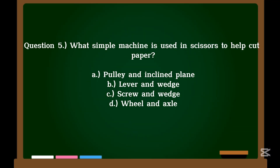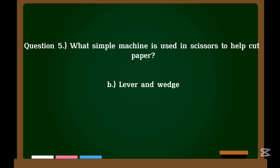Question 5. What simple machine is used in scissors to help cut paper? A. Pulley and inclined plane. B. Lever and wedge. C. Screw and wedge. D. Wheel and axle. Correct answer: B. Lever and wedge.